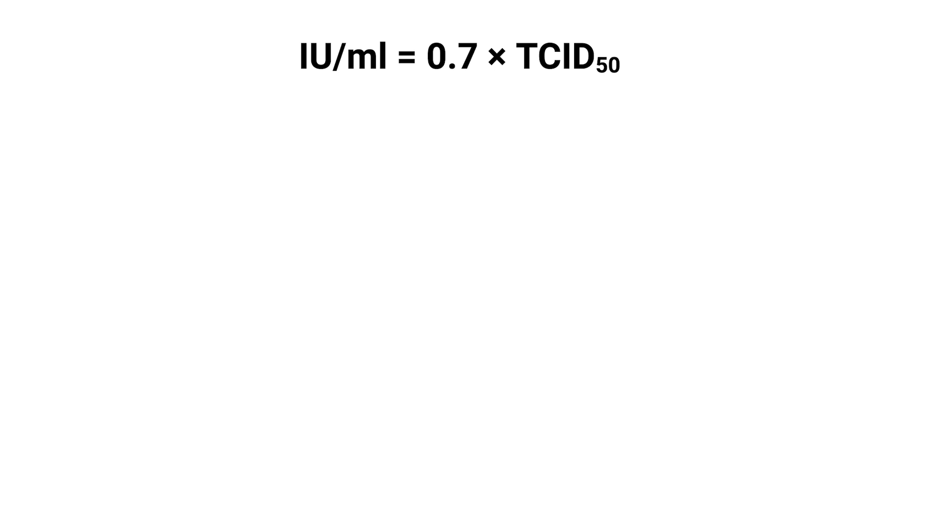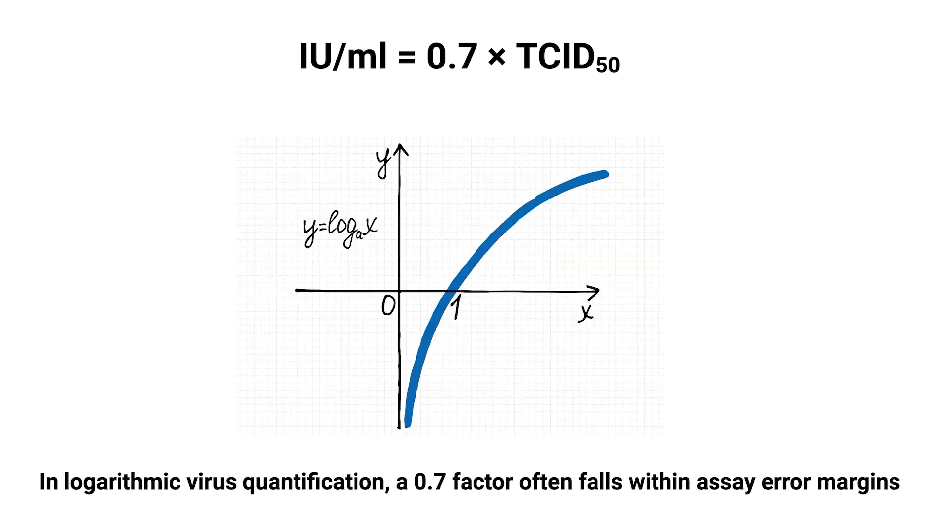However, because virus quantification is logarithmic, a factor of 0.7 might align with the experimental error range of our assay, which means this conversion might not always be essential. To put this into perspective, consider these values. We have measurements like 5.27 times 10 to the 6 TCID-50 per milliliter, and after conversion, 3.7 times 10 to the 6 infectious units per milliliter. This difference is not substantial when we speak about viruses.